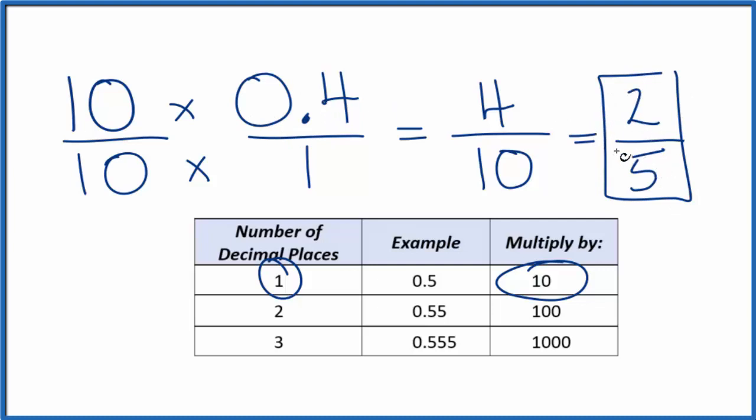If you divide 2 by 5, you will get 0.4. This is Dr. B, and thanks for watching.